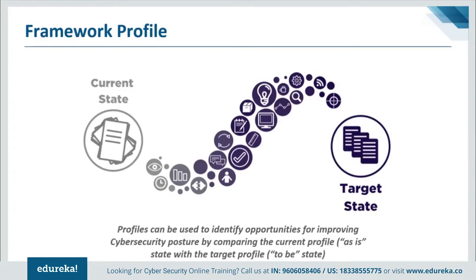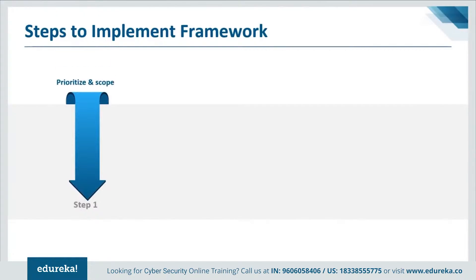The following steps illustrate how an organization could use the framework to create a new cybersecurity program or improve an existing one. These steps should be repeated as necessary to continually improve cybersecurity. Step 1 is to Prioritize and Scope: the organization identifies its business and mission objectives and high-level organizational priorities. With this information, the organization makes strategic decisions regarding cybersecurity implementations and determines the scope of systems and assets that support the selected business line or process. The framework can be adapted to support different business lines within an organization, each with different risk tolerances, which may be reflected in a target implementation tier.